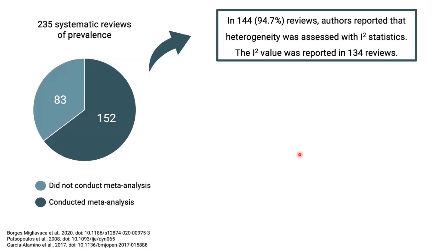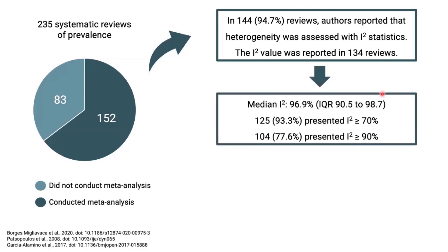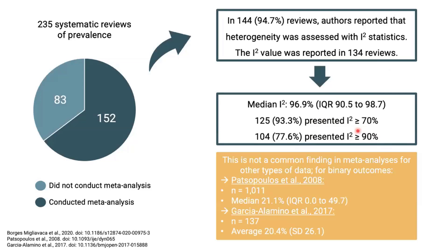The I² value was reported in 134 reviews. We found that the median I² was 96.9%, and almost 78% of these reviews presented an I² over 90% — very high. This is not a common finding for meta-analyses of other types of data. For example, one study assessed I² in meta-analyses of binary outcomes and found a median I² around 20%. So the values found in prevalence meta-analyses are very high by comparison.